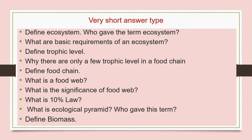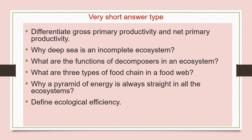Next is: what is ecological pyramid and who gave this term? Next question is: define biomass. Next question is: differentiate gross primary productivity and net primary productivity. Next question is: why is deep sea an incomplete ecosystem? Next question is: what are the functions of decomposers in an ecosystem? Next is: what are the three types of food chain in a food web? Next is: why is a pyramid of energy always upright in all the ecosystems?